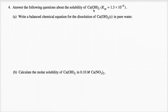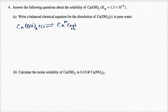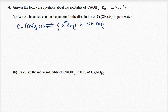Answer the following questions about the solubility of calcium hydroxide, and they give us the solubility product. Write a balanced chemical equation for the dissolution of solid calcium hydroxide in pure water. So we start with calcium hydroxide solid, in equilibrium. When dissolved, you have calcium ions with a positive two charge, aqueous, plus hydroxide ions also dissolved in water, and for every calcium you have two hydroxides. We can see that we are balanced.